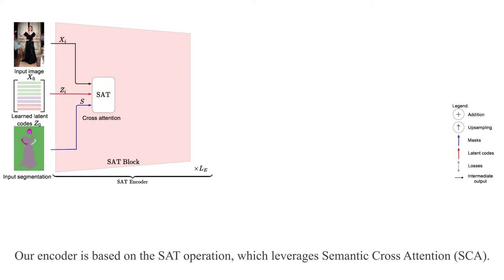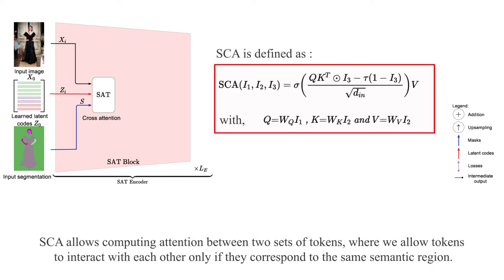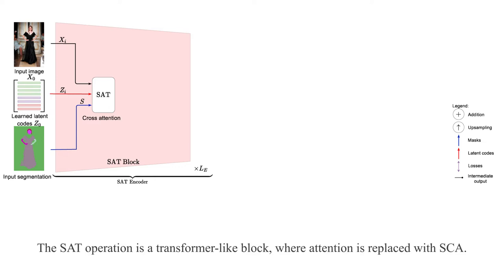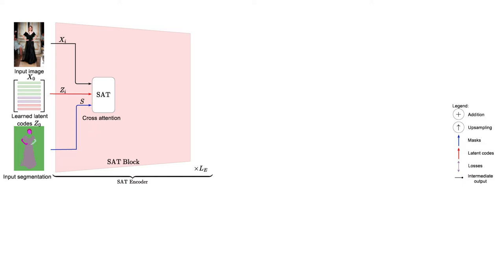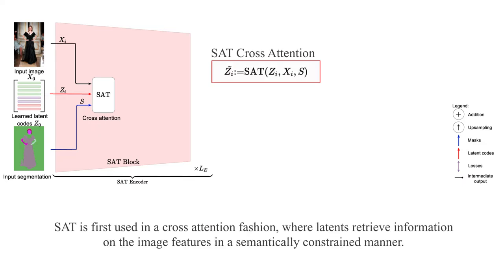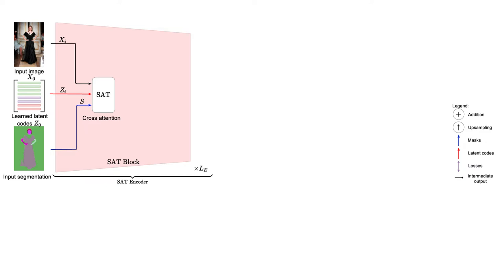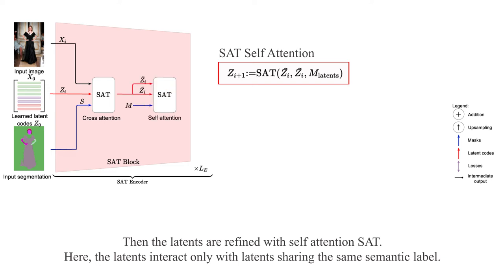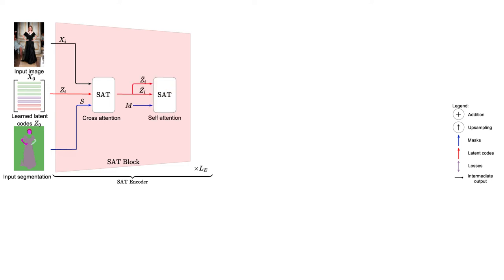Our encoder is based on the SAT operation which leverages semantic cross-attention (SCA). SCA allows computing attention between two sets of tokens, where tokens interact with each other only if they correspond to the same semantic region. The SAT operation is a transformer-like block where attention is replaced with SCA. SAT is first used in a cross-attention fashion where latents retrieve information from the image features in a semantically constrained manner. Then, the latents are refined with self-attention SAT, where latents interact only with latents sharing the same semantic label.